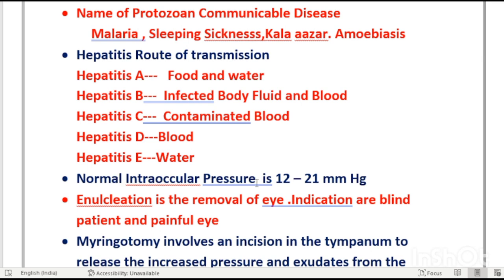Normal intraocular pressure is 12 to 21 mmHg — easy to remember because 12 reversed is 21. If intraocular pressure exceeds 21 mmHg, it is called glaucoma. We must know the normal IOP value.